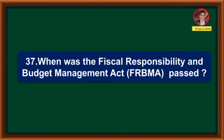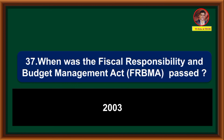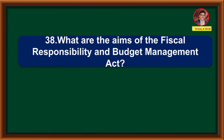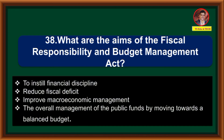When was the Fiscal Responsibility and Budget Management Act (FRBMA) passed? What are the aims of the FRBMA? To install financial discipline, reduce fiscal deficit, improve macroeconomic management, and the overall management of public funds by moving towards a balanced budget. These are the aims of the Fiscal Responsibility and Budget Management Act.